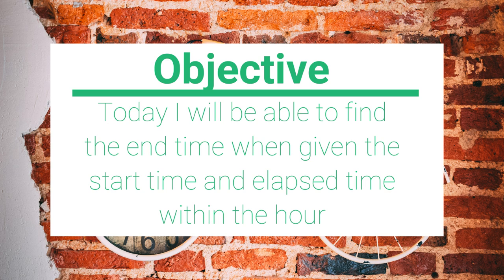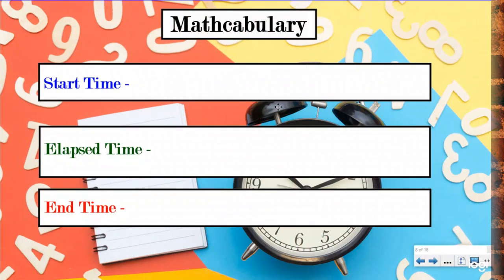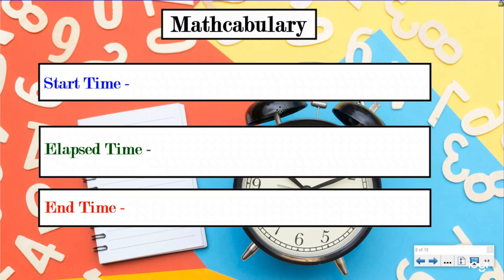We're not crossing over hours. All of our work today is going to be done within the same hour. So let's go take a look at our mathcabulary. You need to know three different phrases that we're going to be using for this lesson and our next few lessons. The first one is start time - that one's pretty self-explanatory. It's the time that an event starts.